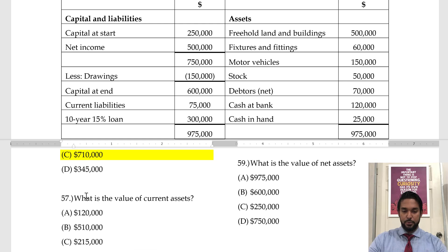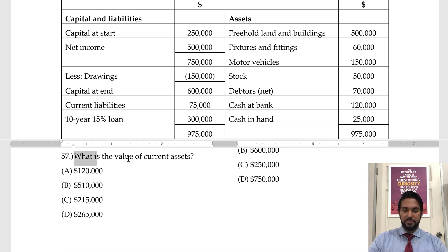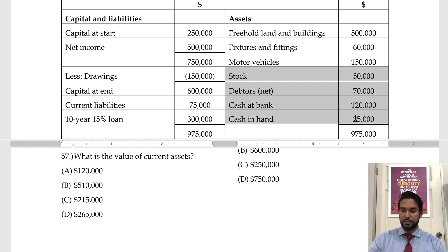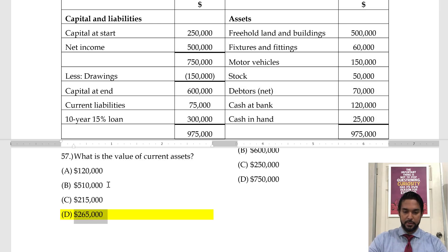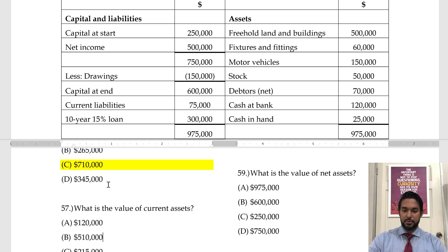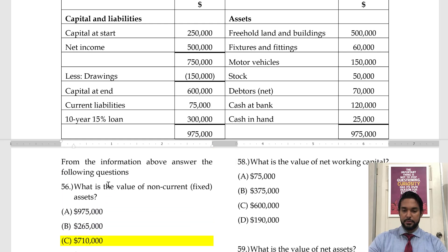What is the value of current assets? Current assets are stock, debtors, bank and cash. 50 and 70 is 120; 120 and 120 is 240; 240 and 25 is 265. So current assets total 265,000.